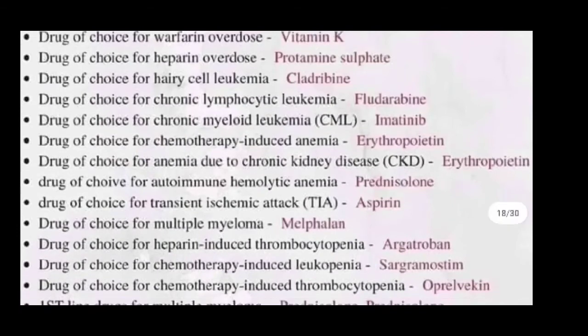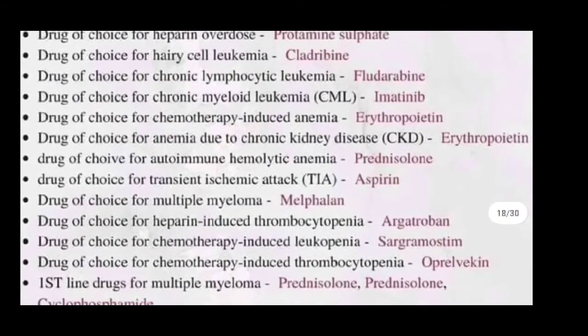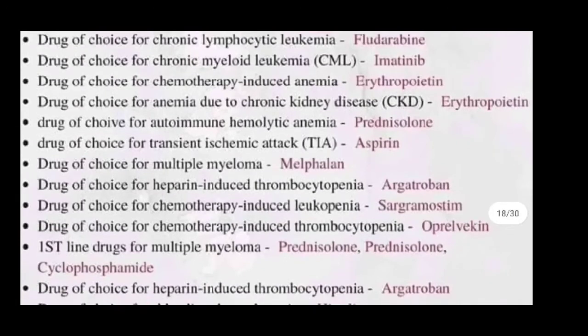Drug of choice for chemotherapy-induced anemia is erythropoietin. Drug of choice for anemia due to chronic kidney disease is erythropoietin. Drug of choice for autoimmune hemolytic anemia is prednisolone. Drug of choice for transient ischemic attack is aspirin.